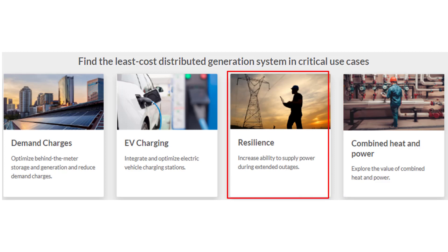This demonstration focuses on using Homer Grid for resiliency — the ability to provide power to critical loads during outages — which is becoming a critical part of our electric power infrastructure. Extended power outages are both costly and dangerous. Using hybrid power that includes a combination of solar and storage along with backup generators can decrease energy costs overall.